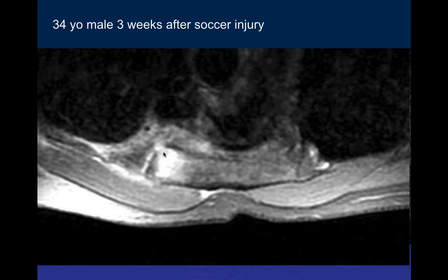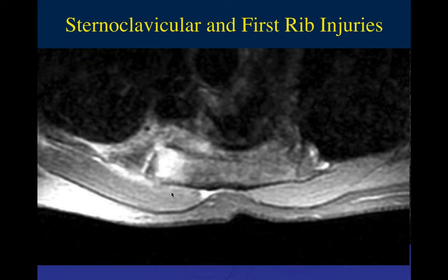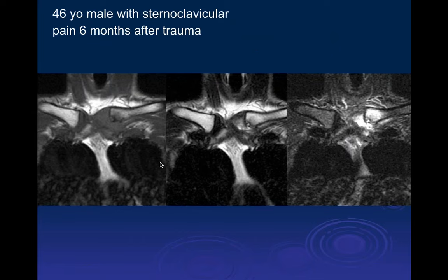Flow in the vessels looks normal on the MR scan. There is bone edema, and edema anteriorly as well. This was treated conservatively without surgery, though it was a more severe example with concern for mediastinal injury. The patient did well. If anteriorly displaced, treatment is always conservative.